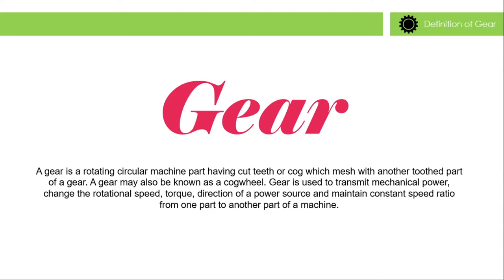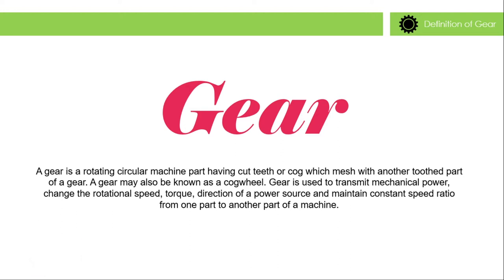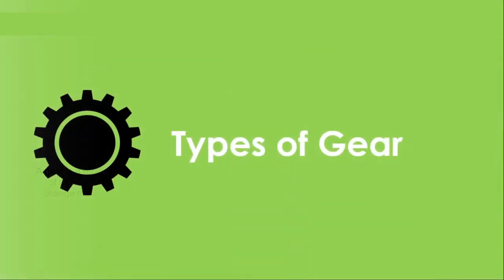Definition of gear: A gear is a rotating circular machine part having cut teeth or cogs which mesh with another toothed part. A gear may also be known as a cogwheel. Gear is used to transmit mechanical power, change the rotational speed, torque, and direction of a power source, and maintain a constant speed ratio from one part to another part of a machine.